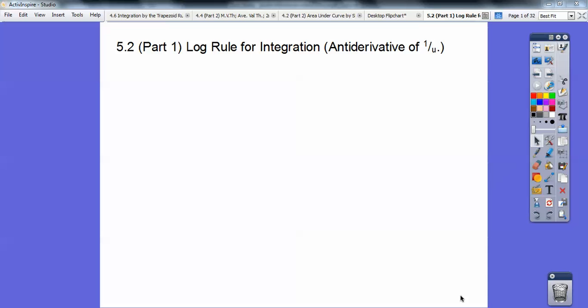Hey folks, this calculus lesson is on log rules for integration, the anti-derivative of 1 over u. This is part 1 of section 5.2. Recall the derivative of natural log of u is du divided by u. So when you go backwards, the integral of 1 over u du is just natural log with absolute values around it plus c, plus the constant.